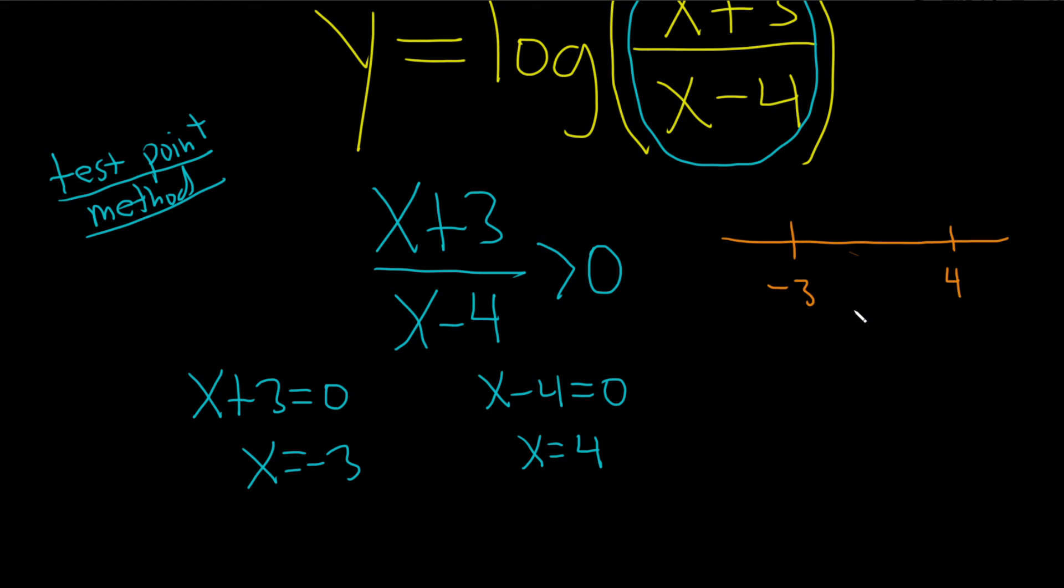The easiest number in the world that we can pick besides these is 0. So let's check 0. So you take the 0 and you plug it in here. So 0 plus 3 over 0 minus 4. And we want to see if this is greater than 0. So we get 3 over negative 4. And is that greater than 0?